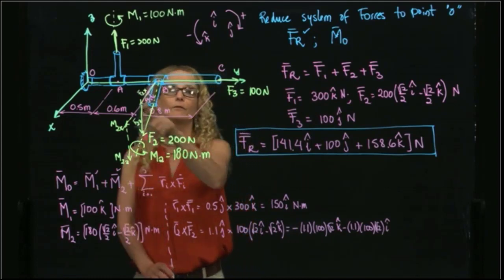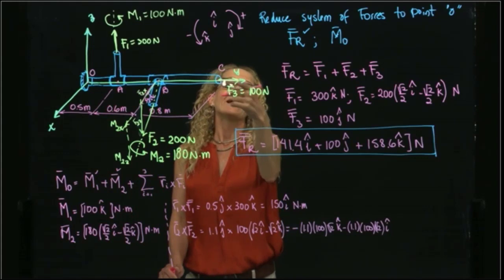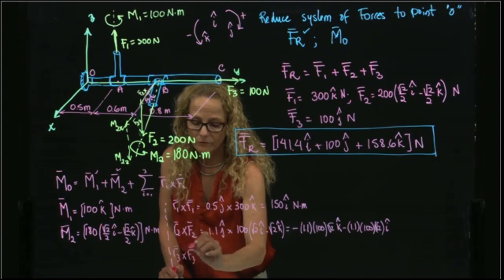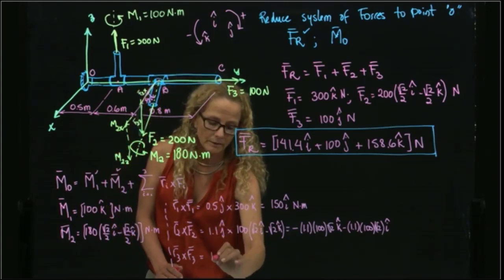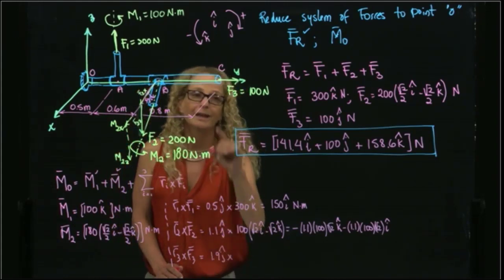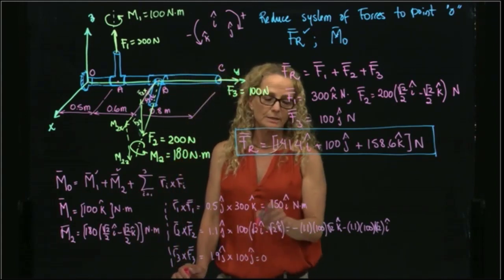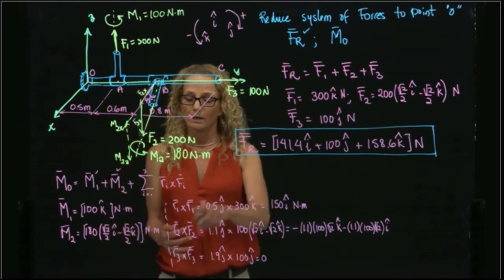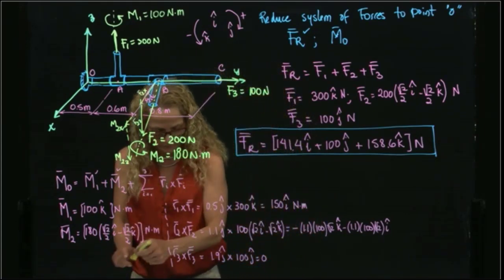And finally, I have F3. As you see, F3 is along, parallel to the distance. So the moment produced by F3 will be this distance over here, which is 1.9 in j cross F3, that is also in j. So that equals to 0, because as you know, j cross j is 0. So I have all the values. I have values in k, values in i, values in k again. So I will add all the components in i, all the components in j, and I have the result over here.